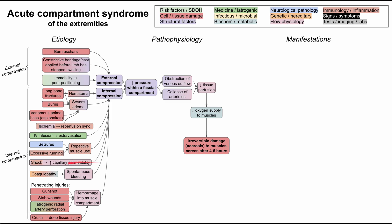One additional cause is increased capillary permeability, which can also lead to internal compression. In septic shock or other types of shock that increase capillary permeability, fluid leaves the vasculature into the fascial compartments, causing internal compression. These are the many etiologies, and we can see how they all lead to increased pressure in the fascial compartment.